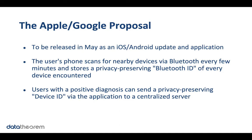Apple and Google made a joint proposal a few weeks ago on how to do contact tracing while trying to protect user privacy. It's going to be released in May as an update to iOS and Android. At a high level, the user's phone scans for nearby devices all the time using Bluetooth. Every time it encounters another device — meaning you're close to someone else — it stores a Bluetooth ID of that other device. If you've tested positive for the virus, you can send your device ID, a privacy-preserving device ID, to a server to indicate that you are infected.